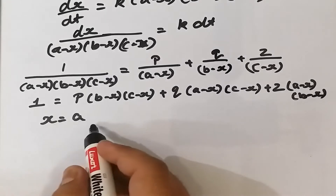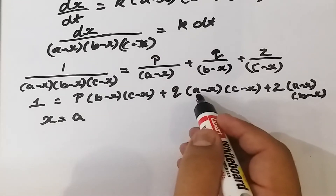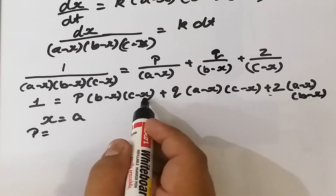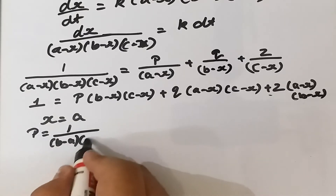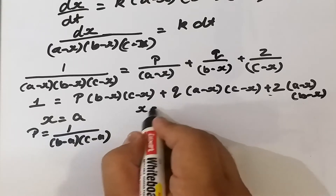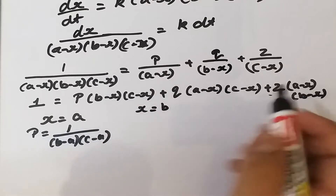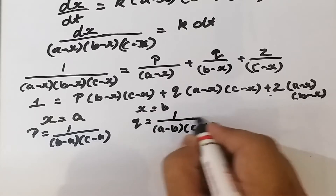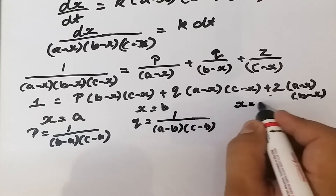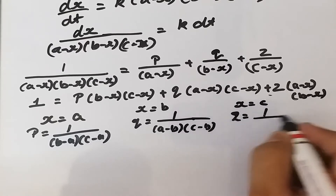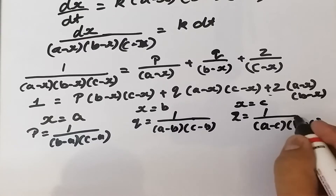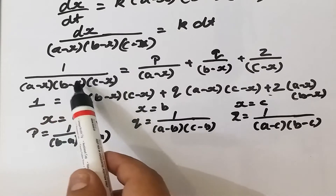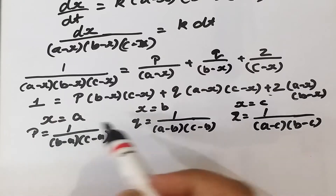To find P, we substitute x equal to a: the other terms become zero, giving P equals 1 upon (b minus a)(c minus a). Similarly, substituting x equal to b gives Q equals 1 upon (a minus b)(c minus b), and substituting x equal to c gives Z equals 1 upon (a minus c)(b minus c).